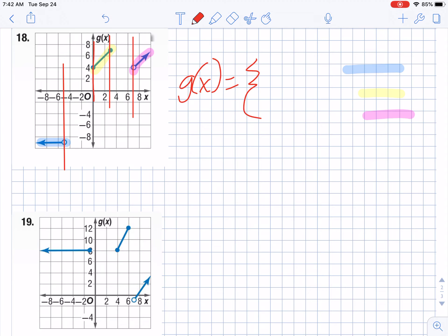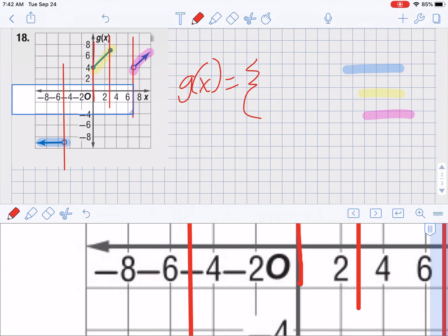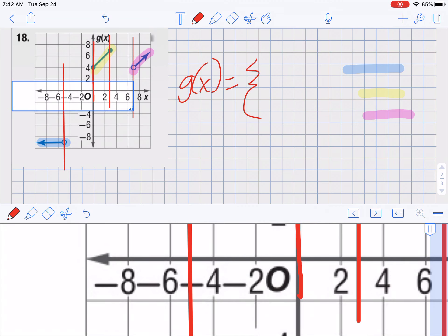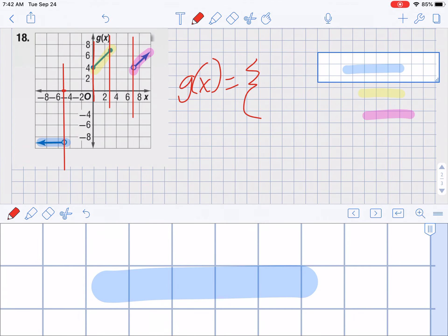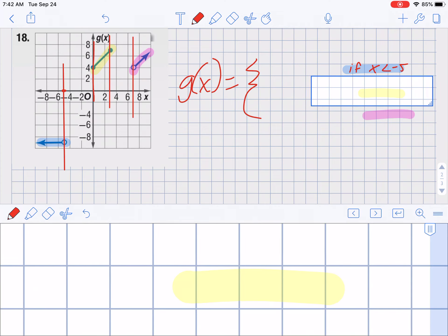So for the blue section, if I look at this a little more closely, I can see that right there where X is negative 5 is going to be my boundary. And because it's an open circle, it's going to be just less than, because it goes to the left, of negative 5. So that's the boundary for that one.